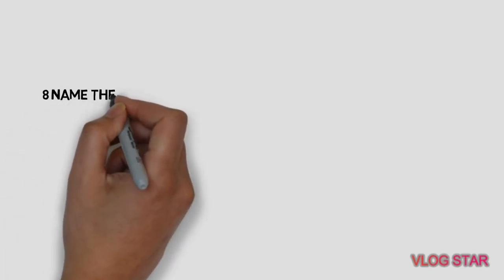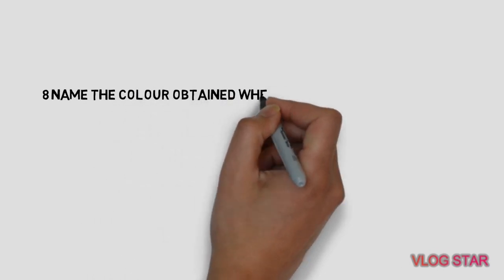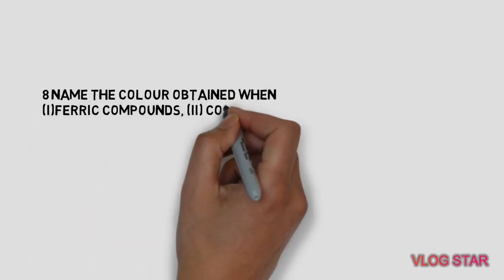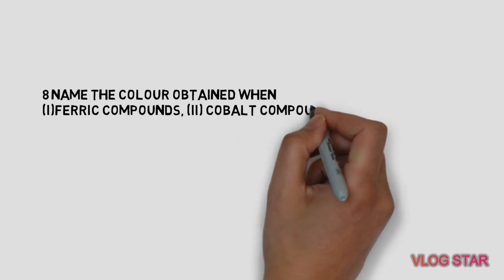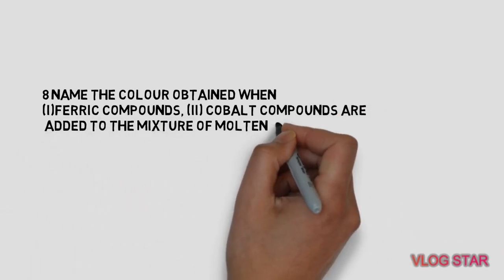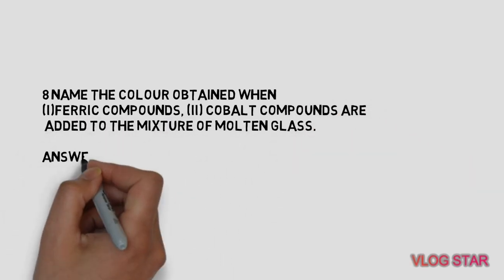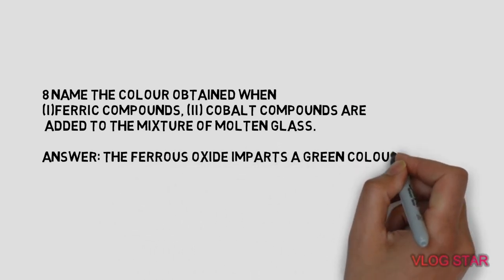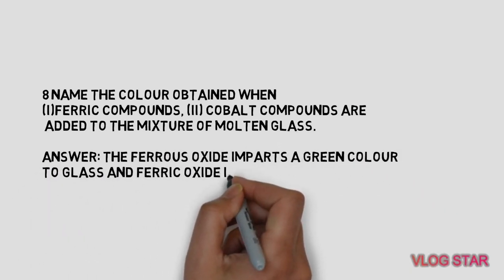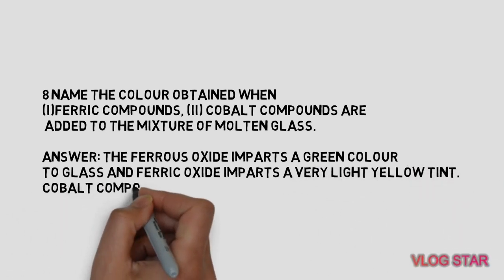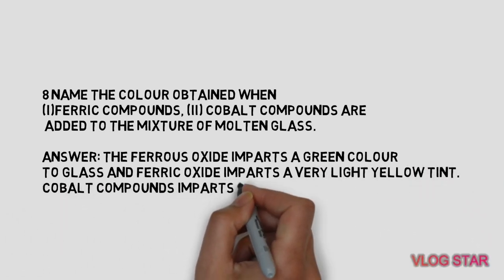Name the colors obtained when ferric compounds and cobalt compounds are added to the mixture of molten glass. Ferrous oxide imparts a green color to glass and ferric oxide imparts a very light yellow tint. Cobalt compounds impart a stark blue color.